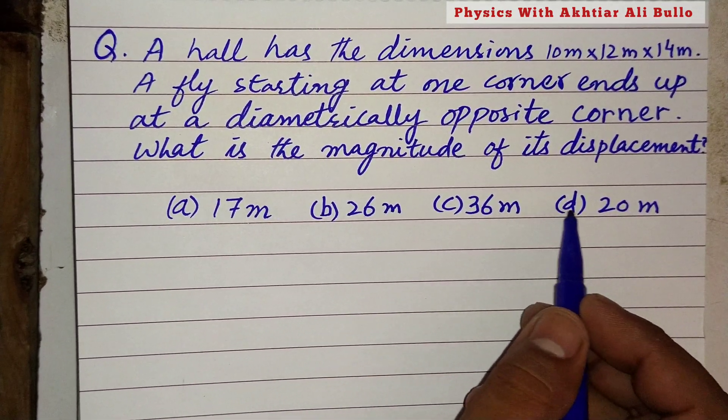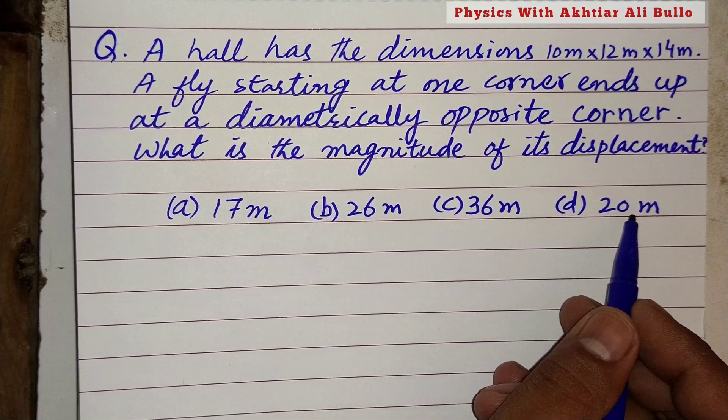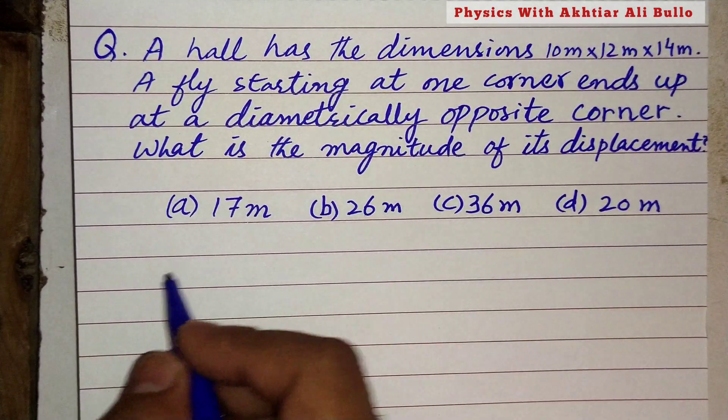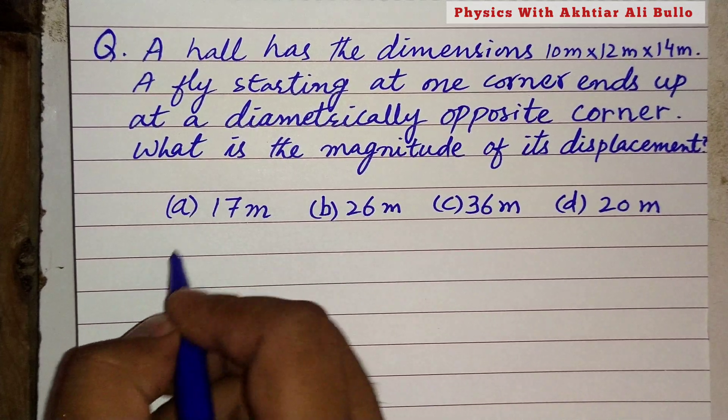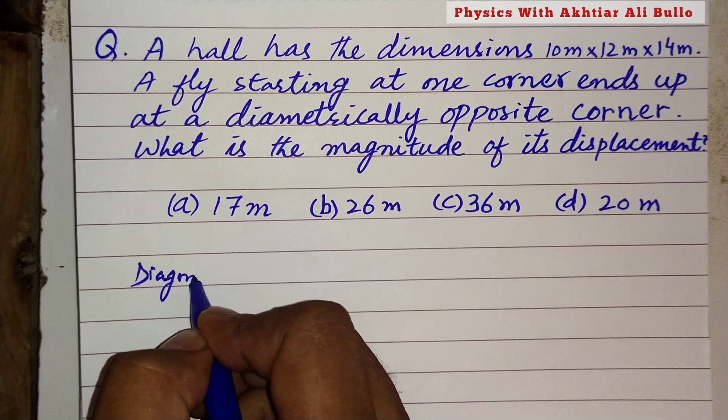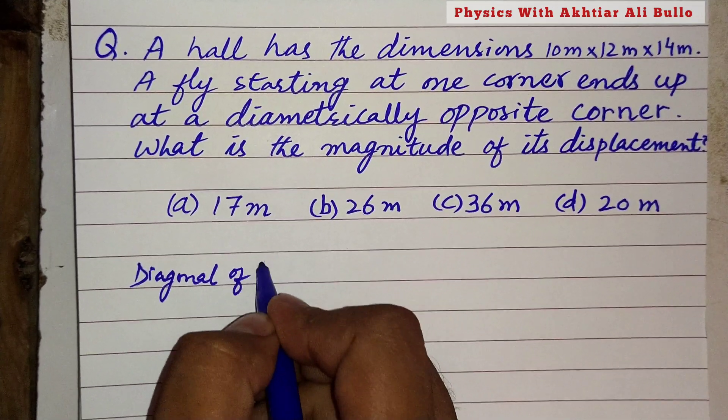The options are: (a) 17 meters, (b) 26 meters, (c) 36 meters, (d) 20 meters. To find the diagonal of the hall...